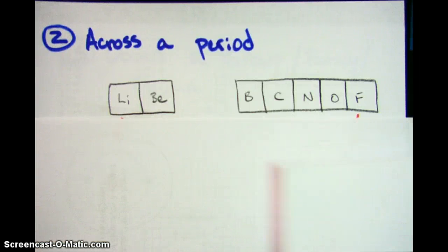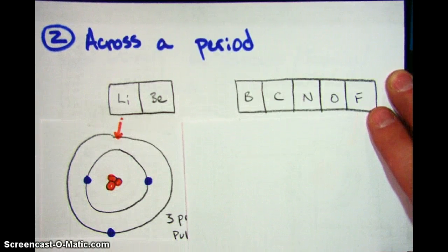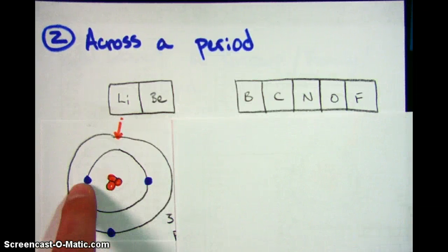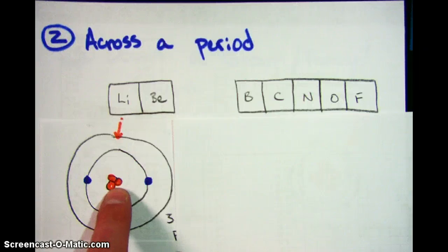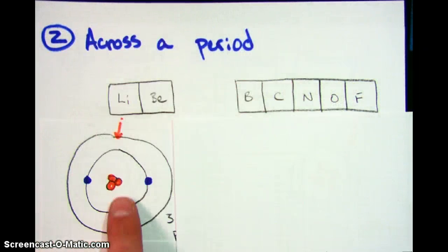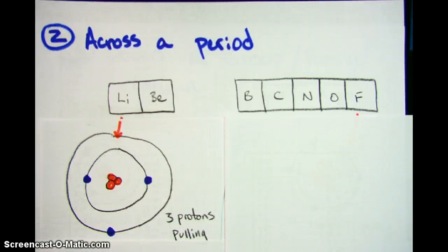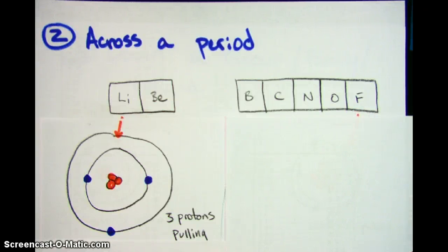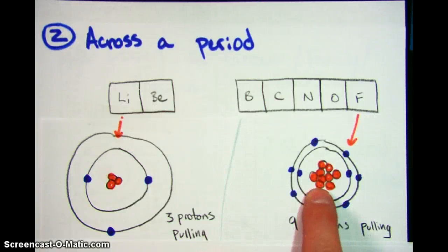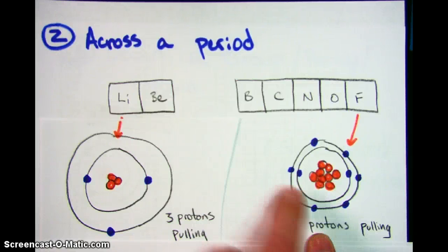As you move across a period, first thing you have to do is have a frame of reference. I've drawn a Bohr model for lithium. In the Bohr model, the things we care about when it comes to size are the protons and the electrons. Since we're measuring from protons to the outer ring, what we're really talking about is how hard these protons are pulling on those electrons to force them to squeeze in. With lithium, there are only three protons and three electrons — some charge of attraction, but generally lithium is a pretty big atom. As we move across to fluorine, fluorine has a lot more protons, which means a lot more pull. More protons pulling means a smaller atom.